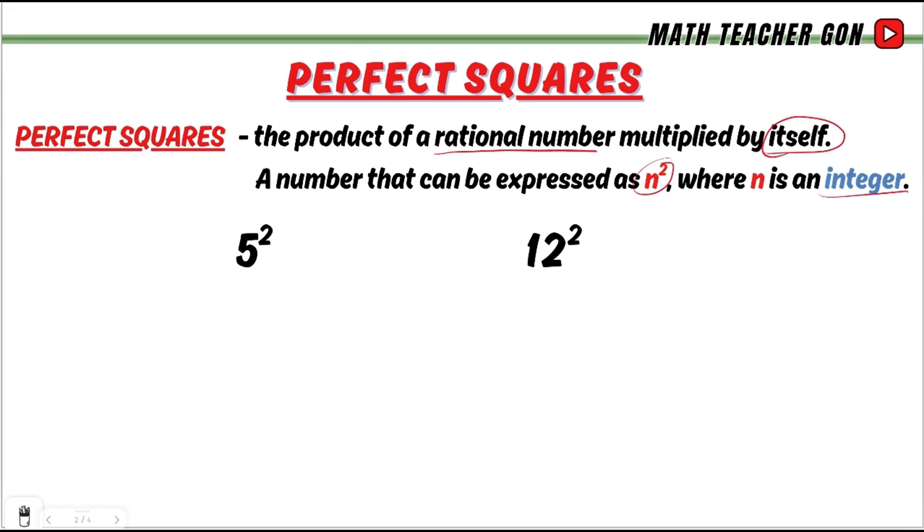We have here 5 squared and 12 squared. This means that 5 squared is equal to 5 times 5. And 5 times 5 is the same as 25. That means 5 squared is equal to 25.